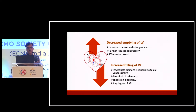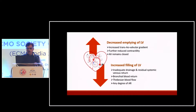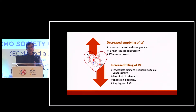The sources of ventricular distension include: increased afterload causing increased trans-aortic valve gradient, further reducing contractility of the already failing LV; closed aortic valve preventing LV ejection; inadequate venous return or residual systemic return going into the LV; bronchial and Thebesian blood flow; and any degree of aortic regurgitation, which may further worsen LV dilatation.